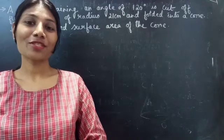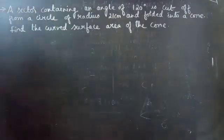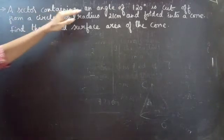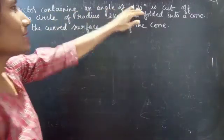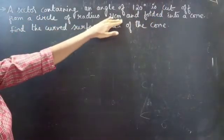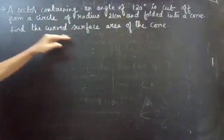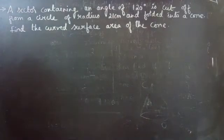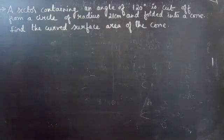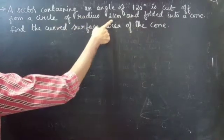Hello everyone, this is Aikaltina here. In this video we are going to see a problem from mensuration. A sector containing an angle of 120 degrees is cut off from a circle of radius 21 cm and folded into a cone. Find the curved surface area of the cone.